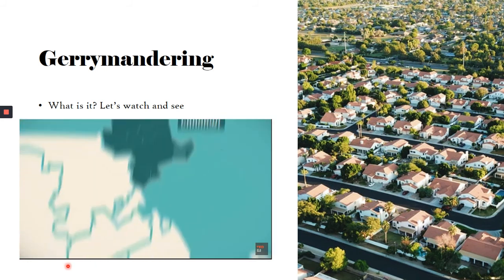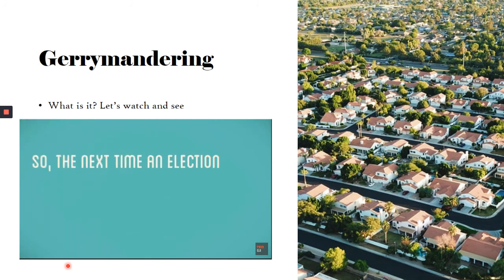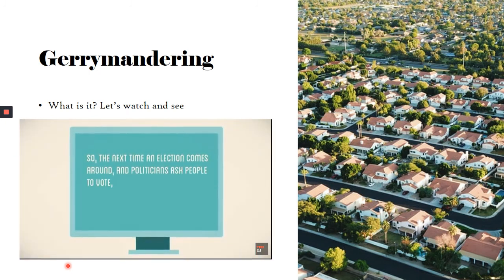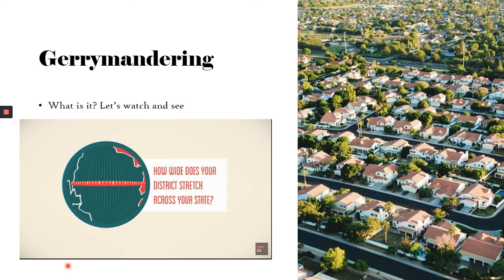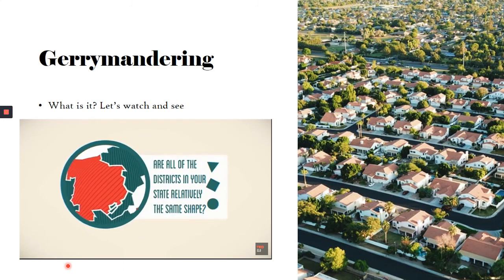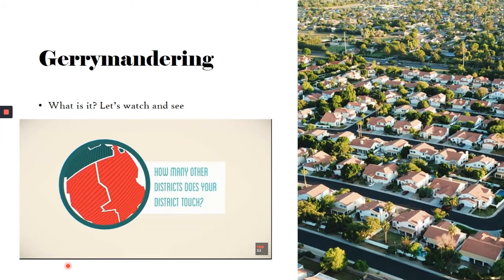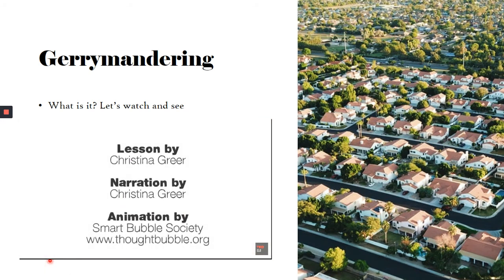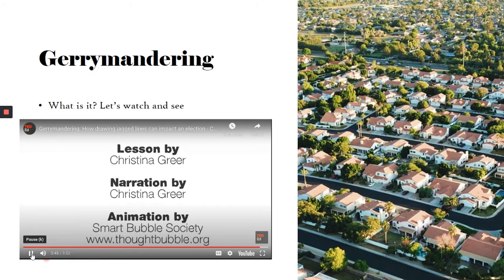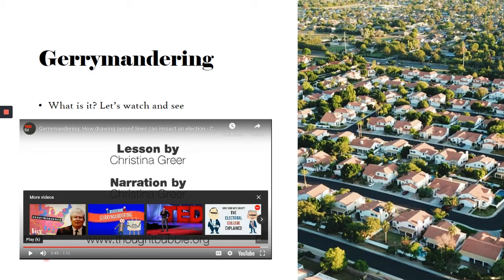Politicians think of creative ways to draw districts every few years. So the next time an election comes around, look up the shape of your district and the districts that surround it — how far does your district stretch across your state, are all districts relatively the same shape, how many other districts does yours touch? Always ask yourself: does my district look like a salamander? This video comes from TED-Ed — if you had trouble watching it or the sound didn't come through, I'll post the link in the lesson. Pause this video and go watch that one — it's really important for what we're going to talk about.